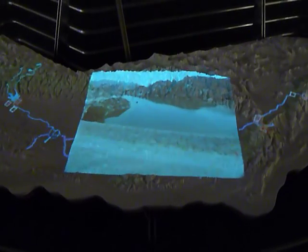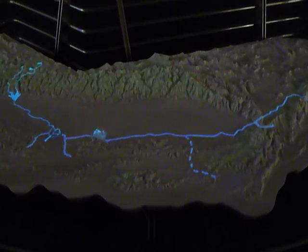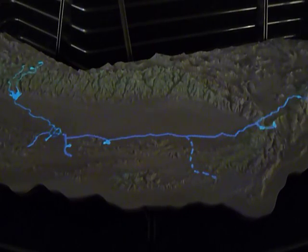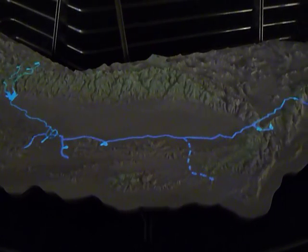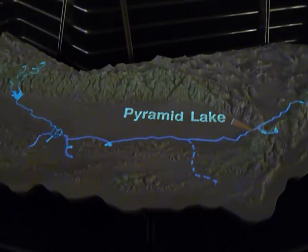Water lifted by the pumping plants and carried by the aqueducts is stored in reservoirs in the San Francisco Bay Area and in Central and Southern California. Pyramid Lake, which you can see from this visitor center, is one of the project's reservoirs.